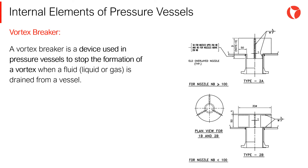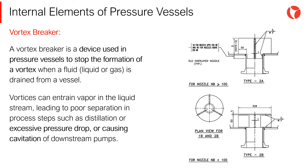A vortex breaker is a device used in pressure vessels, as well as any other types of equipment, to stop formation of a vortex when a fluid, liquid or gas, is drained from a vessel such as a tank or a vapor-liquid separator. Formation of vortices can entrain vapor into the liquid stream, leading to poor separation in process steps such as distillation, excessive pressure drop, or causing cavitation of pumps.